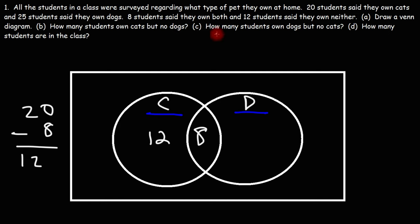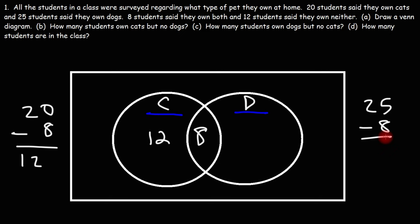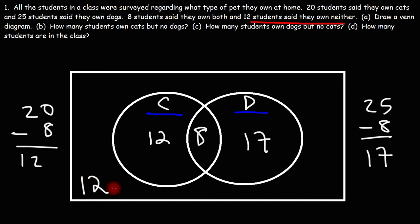What about Part C — how many students own dogs but no cats? We have a total of 25 students who own dogs. Eight own both cats and dogs, so the difference is 17. So 17 students own dogs only. We also have 12 students who own neither cats nor dogs, and we can place that on the outside of the Venn diagram.